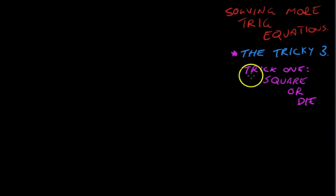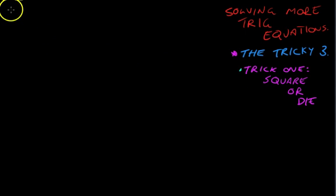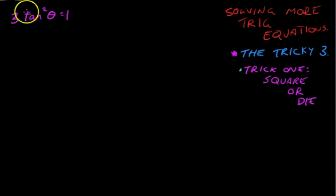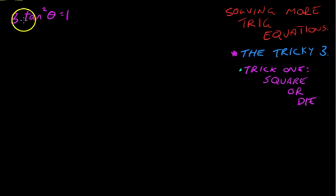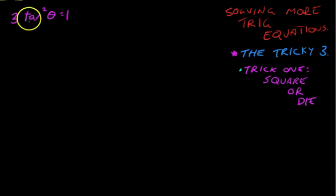The first one I'm going to call Trick One — let's call it 'Square or Die,' in the tradition of the Die Hard movies. So here's the sort of equation we're going to be working with: three times tan squared theta equals one. Now it's important that you understand what this actually says: it's three times tan theta, all squared, equals one.